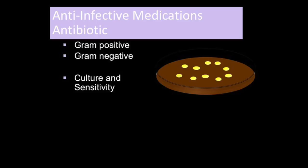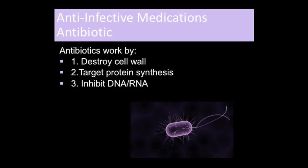Antibiotics that are bactericidal kill the bacteria. Those that are bacteriostatic slow or inhibit the growth of bacteria, weakening or eventually leading to death of the bacteria. There are three ways that antibiotics work: they destroy cell walls, they inhibit protein synthesis, or they inhibit RNA and DNA synthesis.